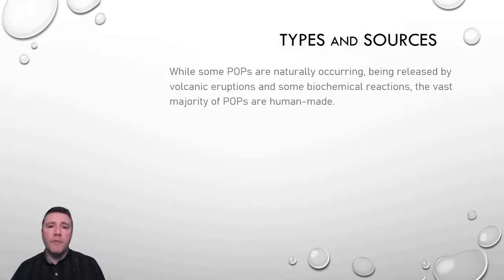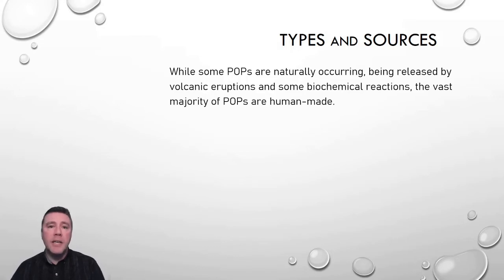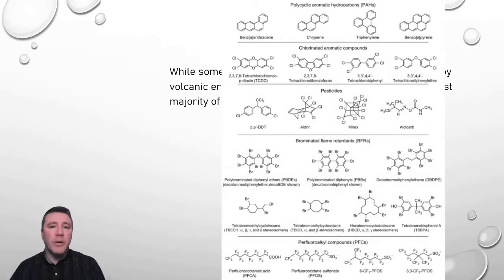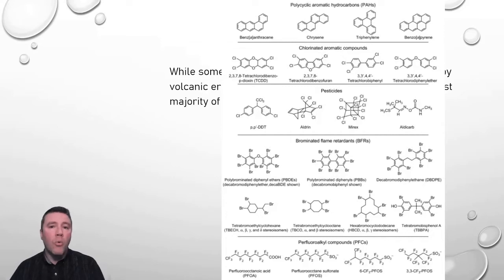There are a number of different types of persistent organic pollutants, and some of them are, in fact, naturally occurring. They can be released by volcanic eruptions, and even are the result of some organisms' natural biochemical processes. But the vast majority of them are human-made. You're not going to be expected to have the structures or names of any of these pollutants memorized, but you should be able to recognize a few features that are pretty consistent throughout each of these examples. One is that they are carbon-based — that's the organic part in persistent organic pollutants.